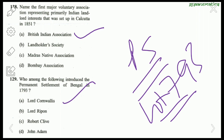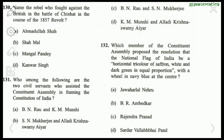Question 129: Who introduced Permanent Settlement of Bengal in 1793? It was introduced by Lord Cornwallis. The right answer is A. Question 130: Who fought against the British in the Battle of Chinhat during the 1857 revolt? The answer is Ahmadullah Shah. Question about Constituent Assembly: the two civil servants who assisted in framing the Constitution of India were B.N. Rau and S.N. Mukherji.